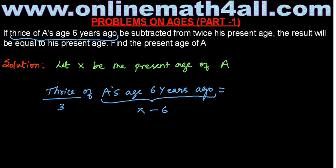For A's present age we assumed X. Six years ago, we just subtract 6 from X, giving X minus 6. For example, if the present age of A is 50, then A's age 6 years ago would be 44, subtracting 6. So in our problem, A's age 6 years ago is X minus 6, and thrice of that is 3 times (X minus 6).